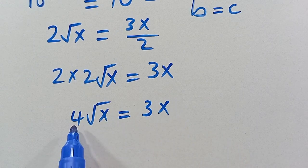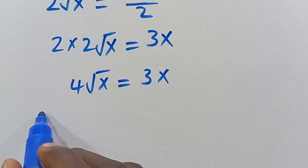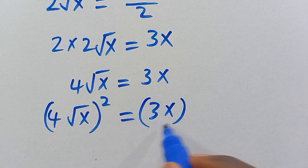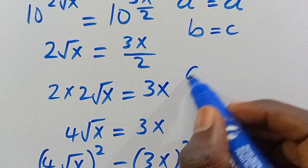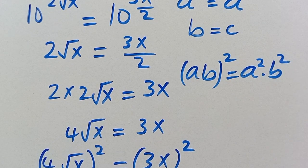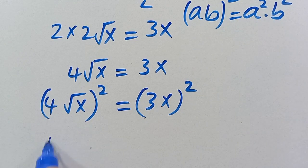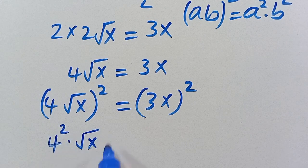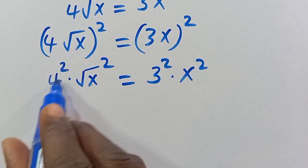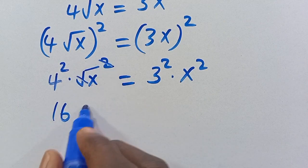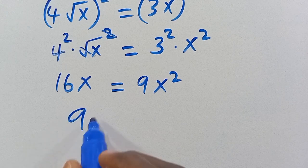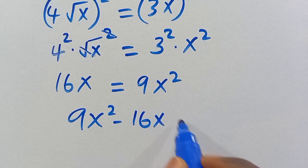To eliminate the root, we square both sides: (4√x)² = (3x)². Expanding using (ab)² = a²b², we get 4² × (√x)² = 3² × x², which gives 16x = 9x². Rearranging: 9x² - 16x = 0.